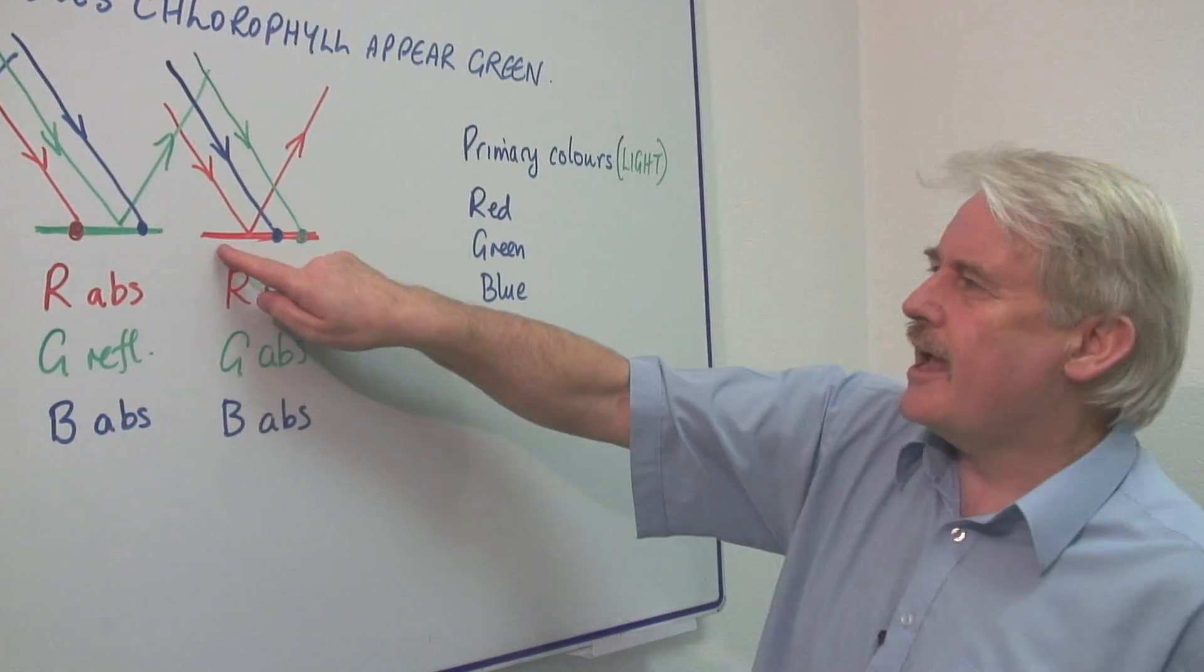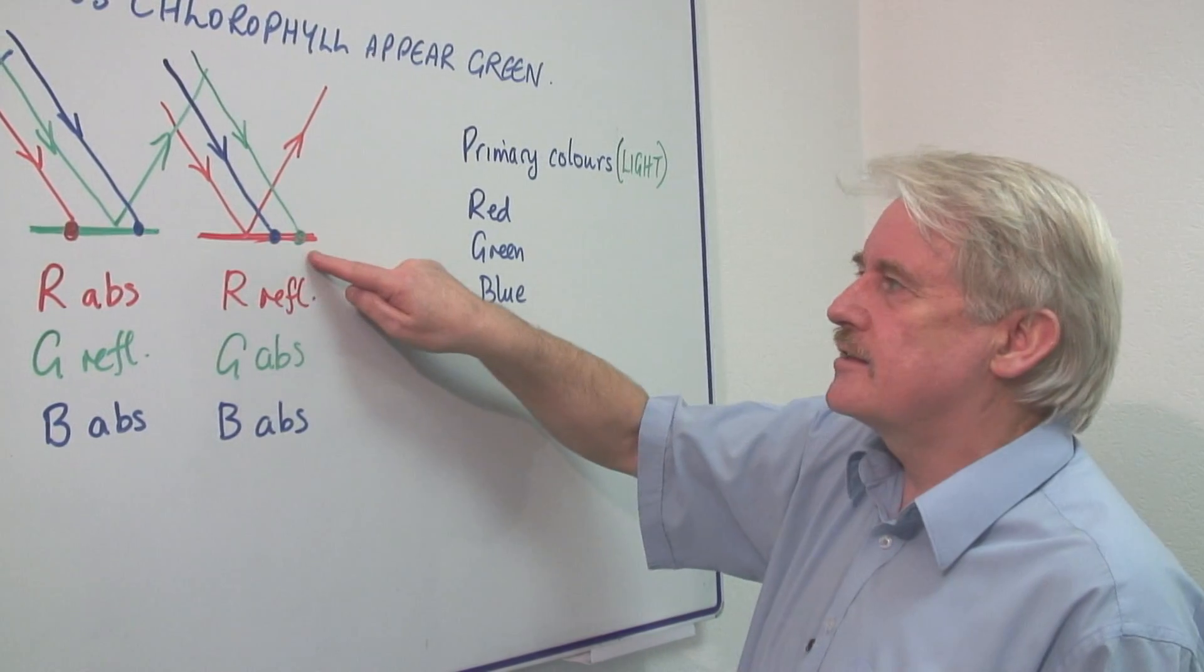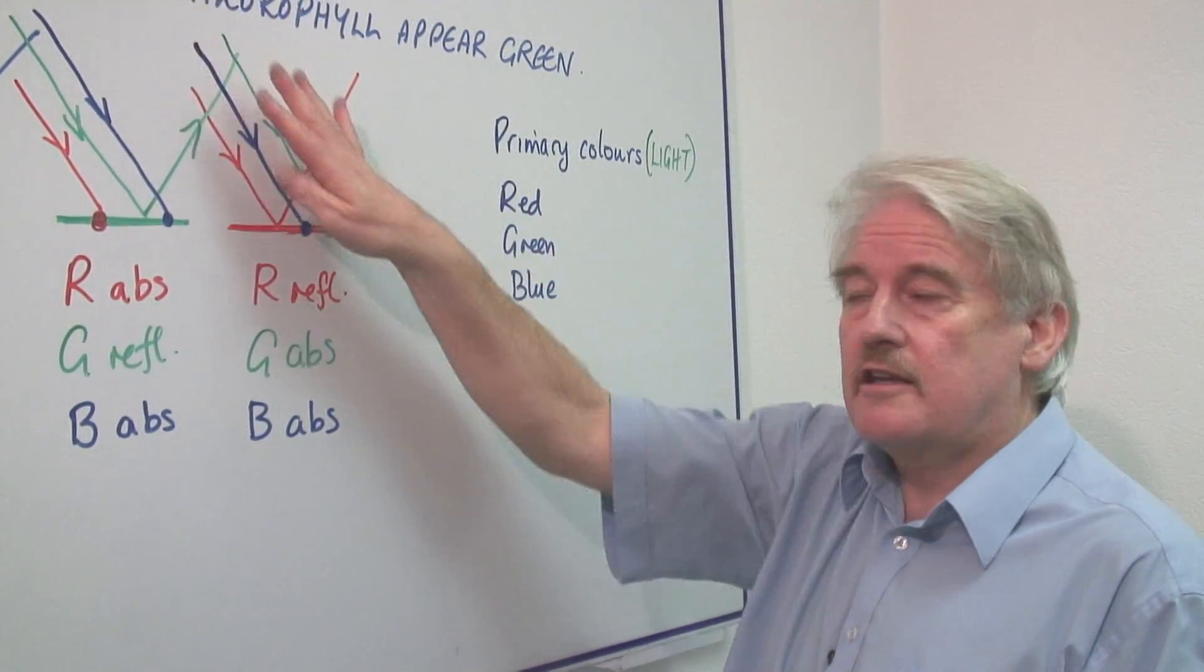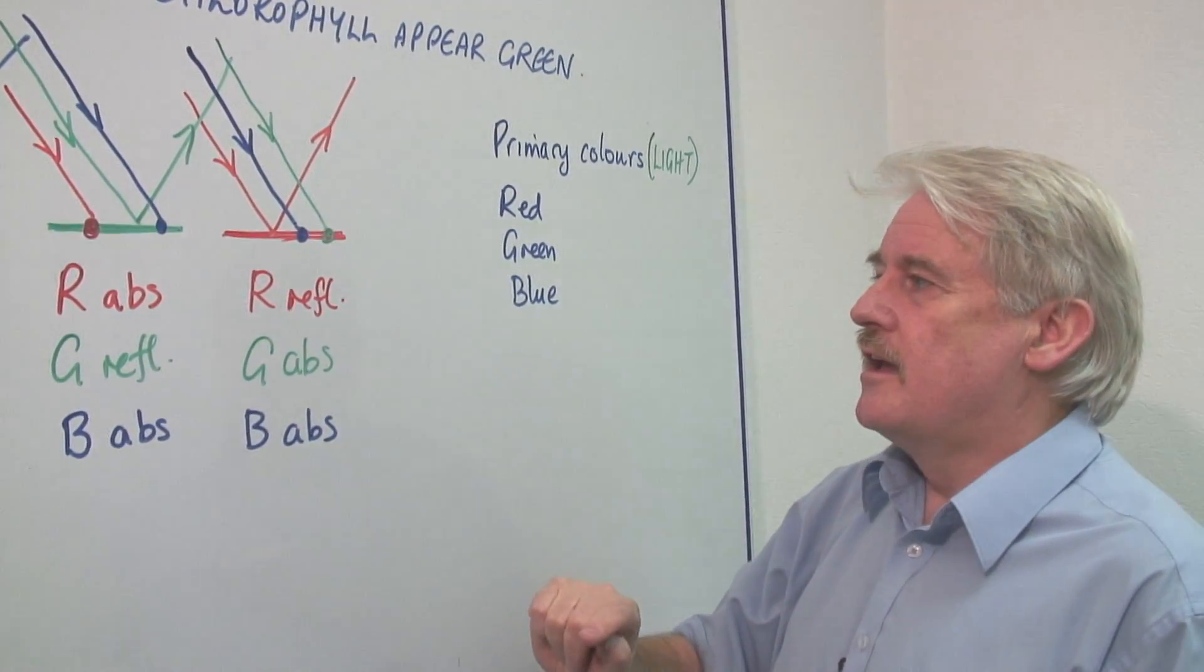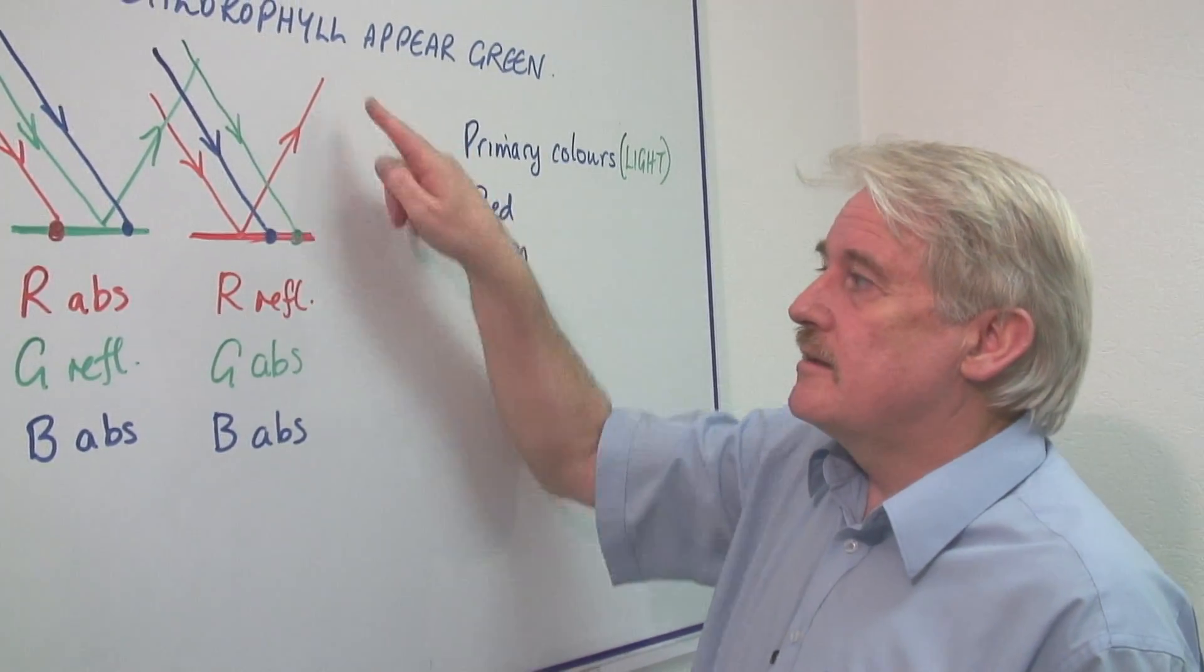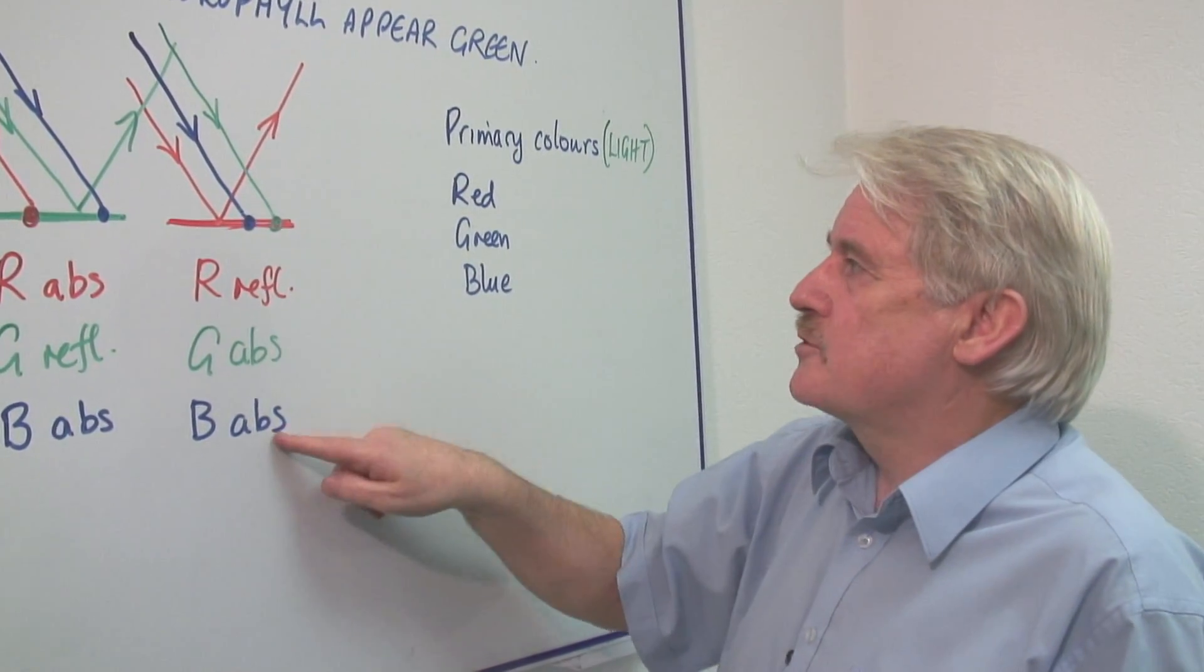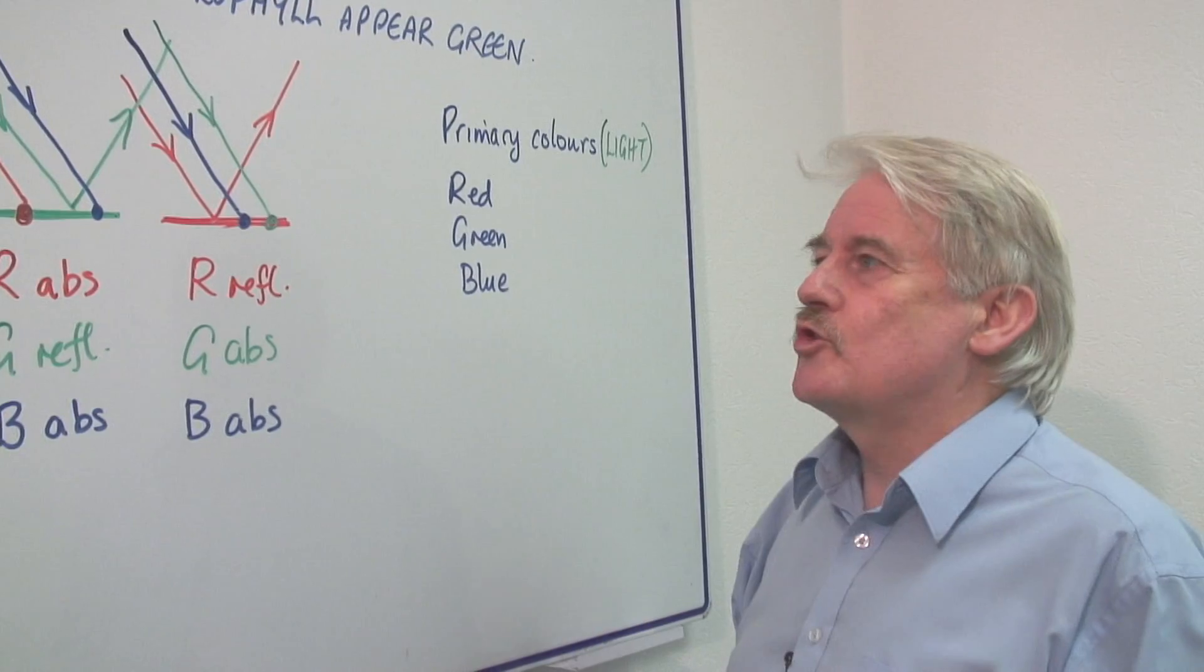Let's go to the red surface next. We've still got red, blue, and green light coming into the surface. The red this time is reflected and the surface looks red. The blue light is absorbed, the green light is absorbed.